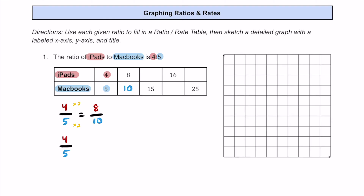Taking this original ratio of 4 to 5 again, we look for the blank where we have 15 MacBooks on the bottom. To figure out how many iPads go with it: 5 times 3 is 15, so 4 times 3 gives us the number of iPads. 4 times 3 is 12, so we know there are going to be 12 iPads for every 15 MacBooks.